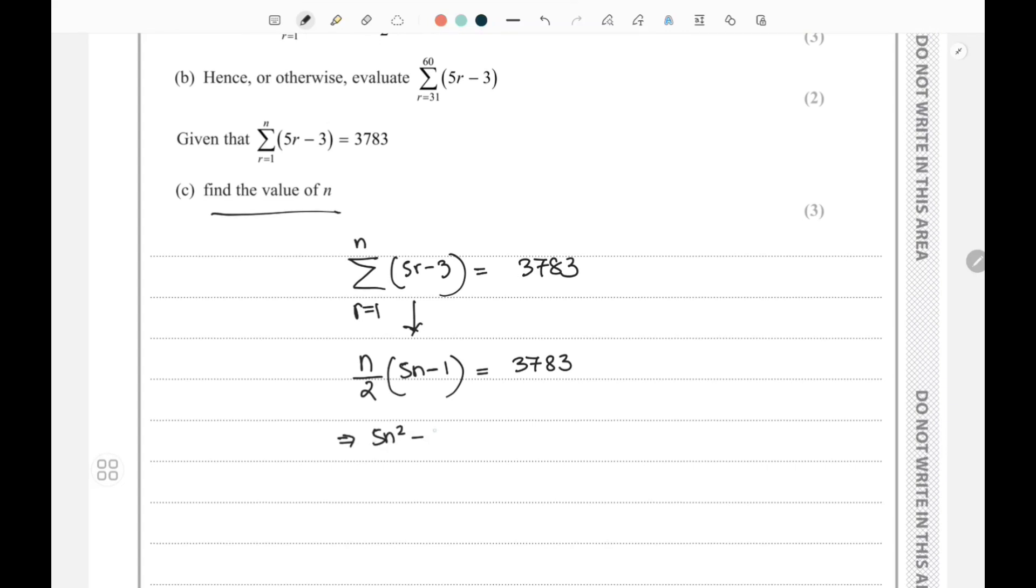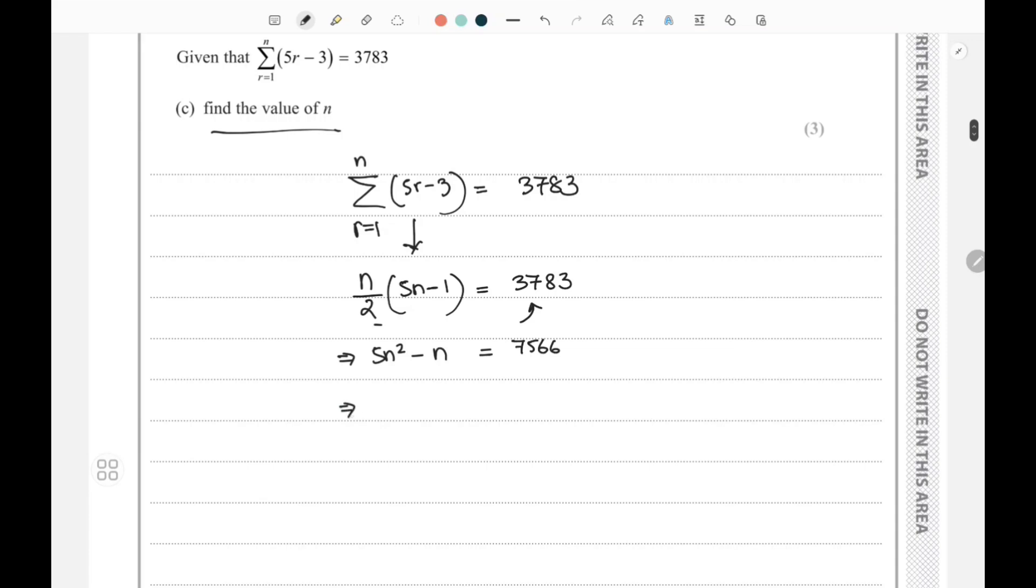That equals 2 multiplied by 3783, so it becomes 7566. So here I can form the quadratic: 5n squared minus n minus 7566 equals 0.